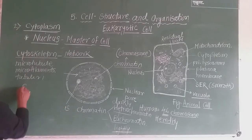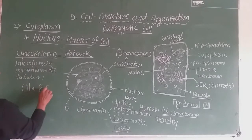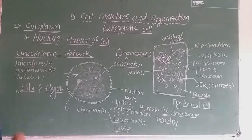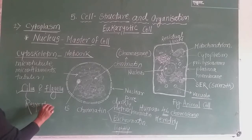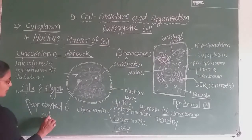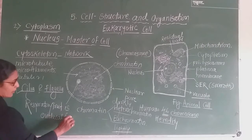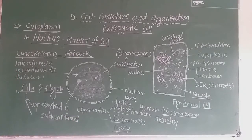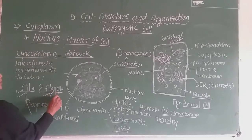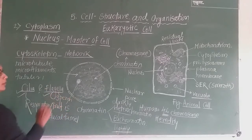Cilia and flagella are also present in the cell. Cilia are present in our respiratory tract and also in the oviducal funnel. Flagella are present for locomotory activity and are mostly found in the case of sperm.